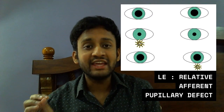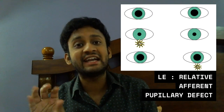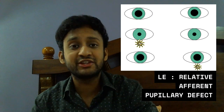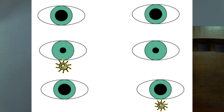There is one crucial finding: she has a relative afferent pupillary defect (RAPD). When throwing the light on the left eye, instead of constriction there is dilation of the pupil. If I throw light on the right eye, both pupils constrict. But throwing light on the left eye causes dilation of the left pupil, and even the right eye pupil dilates — that is the apparent pupillary defect.